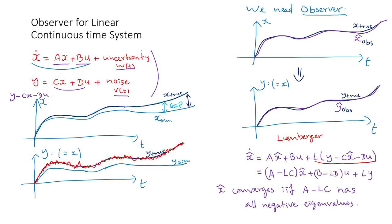What is an observer? You have learned before how to simulate a state equation derived from a physical system in the form of a differential equation — more precisely, a system of differential equations — as in x-dot equals Ax plus Bu. However, you have made some assumptions in order to have a simple equation. So what kinds of assumptions commonly occur?